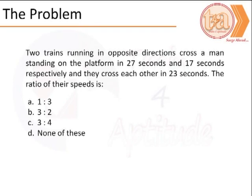The problem is as follows: two trains running in opposite directions cross a man standing on the platform in 27 seconds and 17 seconds respectively, and they cross each other in 23 seconds. The ratio of their speeds is 1:3, 3:2, 3:4, or none of these.